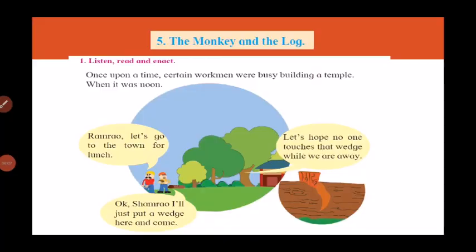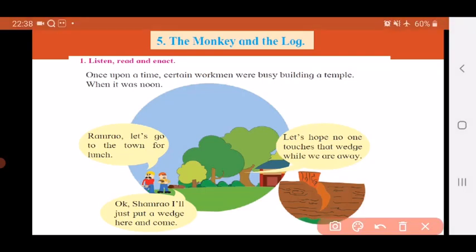Good morning children, hope you are safe at home. Today we will read the story 'The Monkey and the Log'. Monkey means bandar and log means a piece of wood that is cut from a tree, so it is part of the trunk of the tree. Now let's read the story and then understand it.